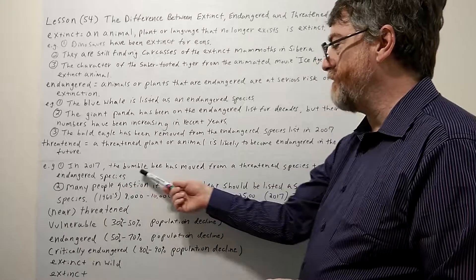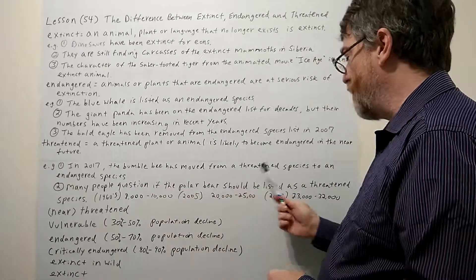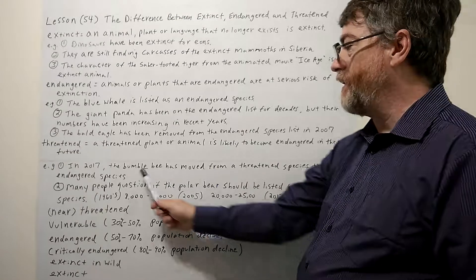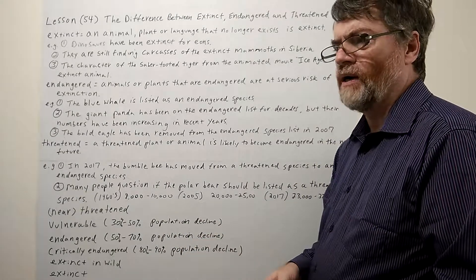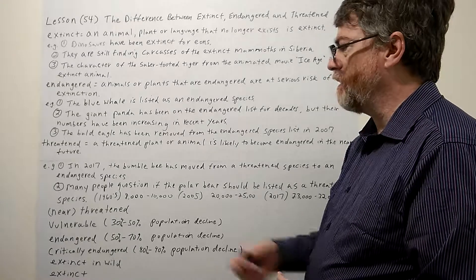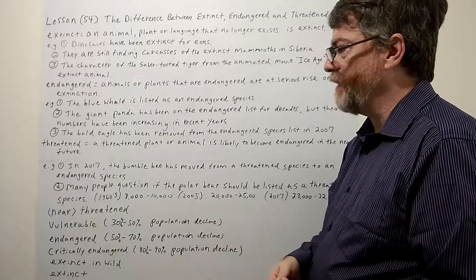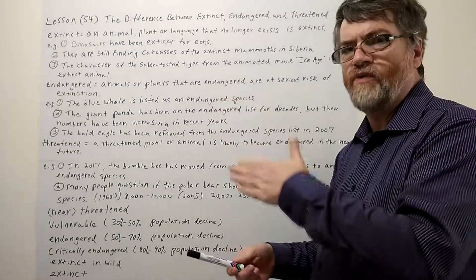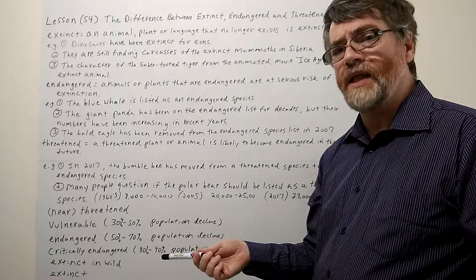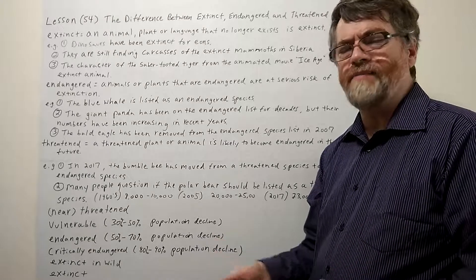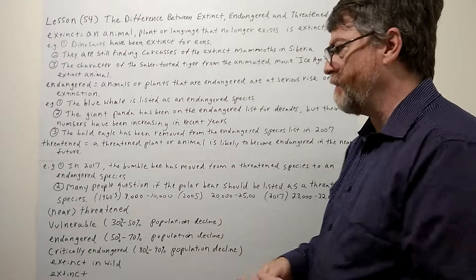Let's take a look with threatened. In 2017, the bumblebee has moved from a threatened species to an endangered species. Now they are actually endangered, or at least certain species of them. Bumblebee in America. So you kind of move in that order. Here's one that comes up a lot in class.